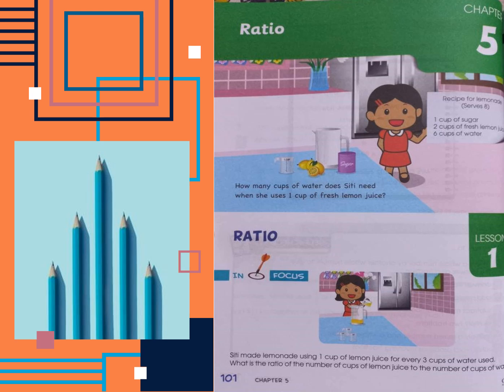Hello children and welcome to lesson number one of chapter five: ratios. Let's start this chapter with an example in which Cindy made lemonade using one cup of lemon juice for every three cups of water. What is the ratio of the number of cups of lemon juice to the number of cups of water?